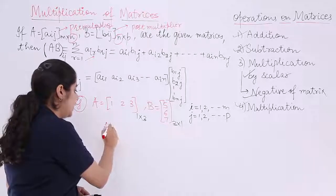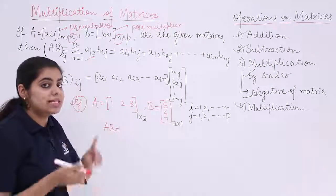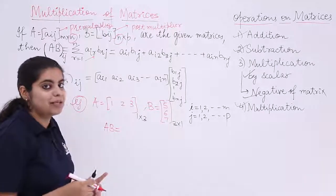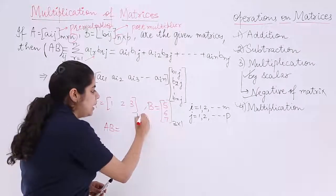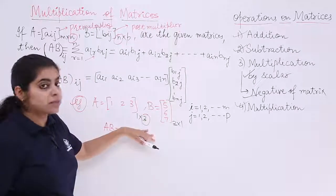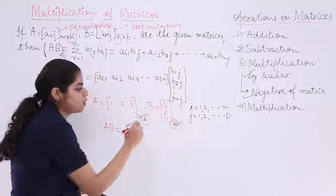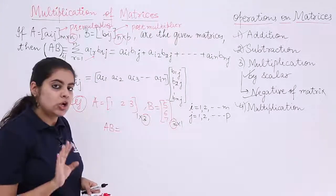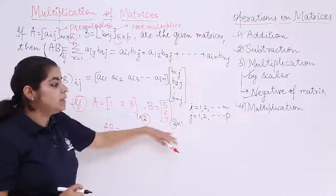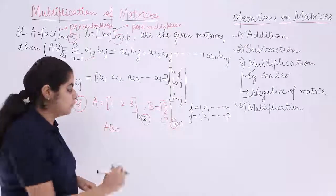Now check. If I have to find out A into B, A into B means A is coming first, so it is my pre-multiplier. Pre-multiplier's number of columns should be equal to number of rows of the post-multiplier. It is happening. So that means I will be having this multiplication as possible.